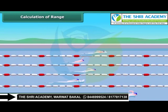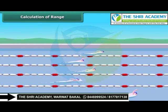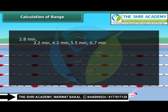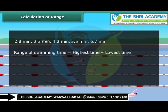Five participants completed their swimming race. Can we calculate the range of swimming time from this data? Yes, it's simple. First, order the data from least to greatest. Now subtract the least value of time from the highest. So the range of swimming time is 3.9 minutes.